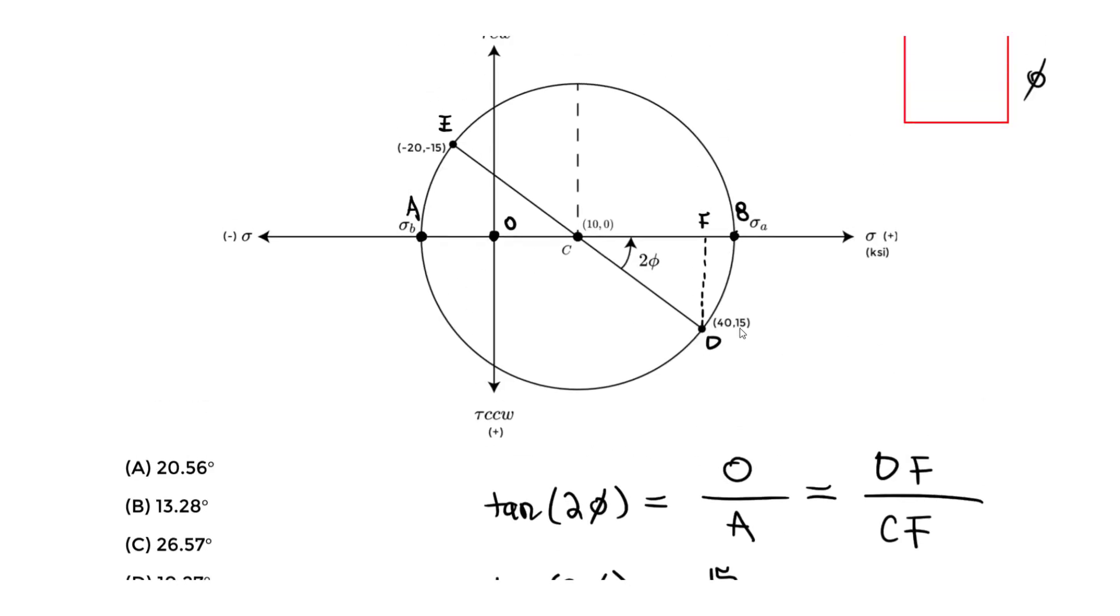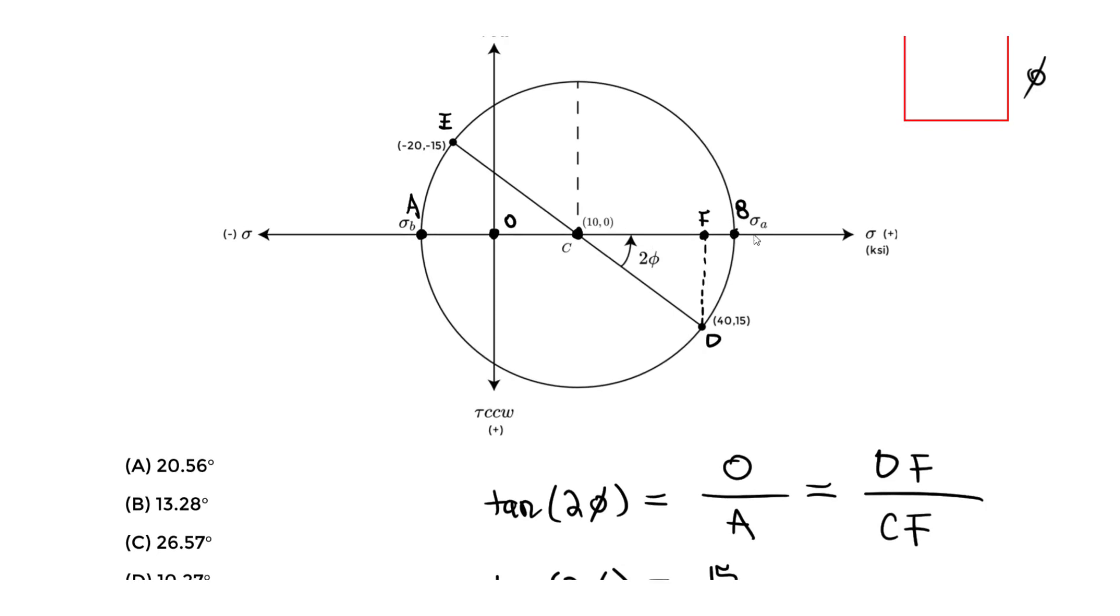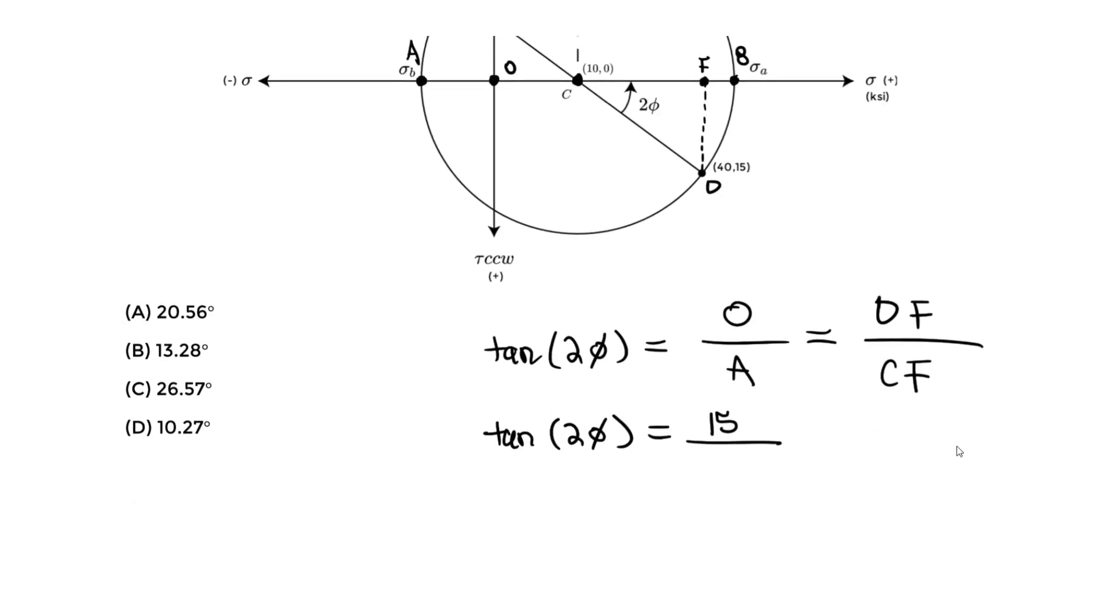Now what's the adjacent? We know the adjacent has to be the difference between the points here. So this will have a coordinate and this will have a coordinate. So we have to take the change in X. So our X coordinate at F is going to be 40 and our X coordinate at C is 10. We do final X minus initial X. So we do the 40 minus 10 to determine that distance, which is CF. So we do 40 minus 10.